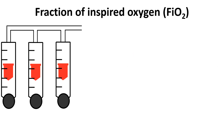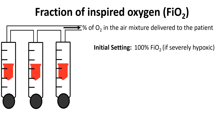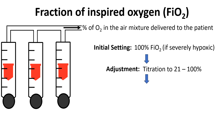Fraction of inspired oxygen represents the percentage of oxygen in the air mixture delivered to the patient. Adjusting FiO2 is crucial for ensuring adequate oxygenation, especially in patients with hypoxemia. Ventilators often start with an FiO2 of 100% to rapidly achieve optimal oxygenation. Once the patient's oxygen levels stabilize, FiO2 is gradually reduced to the lowest effective concentration to maintain adequate oxygen saturation, ranging between 21% — equivalent to room air — and 100%. Continuous assessment of arterial blood gases and oxygen saturation is essential to guide FiO2 adjustments, ensuring sufficient oxygenation while avoiding hyperoxia.